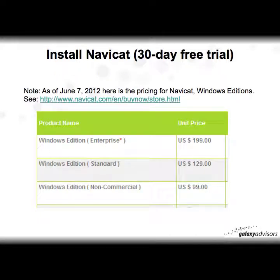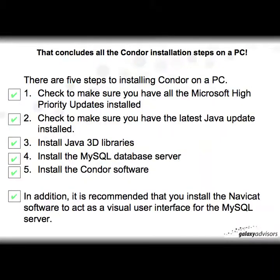As a notice from June 7th, 2012, here is some pricing information: for non-commercial or educational use, the standard edition is $99, the next tier is $129, and if you want a couple of licenses with a report viewer it's $199. That concludes all the Condor installation steps — the five required ones and the additional NaviCat option.